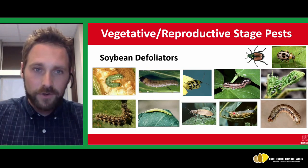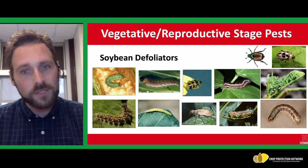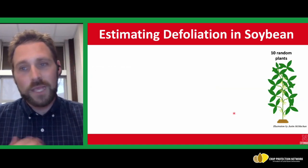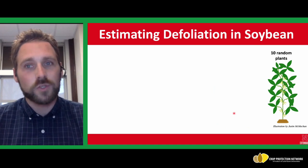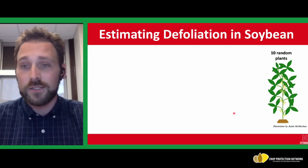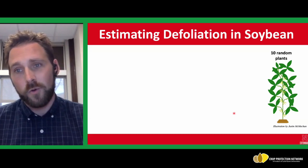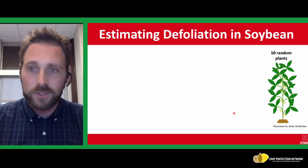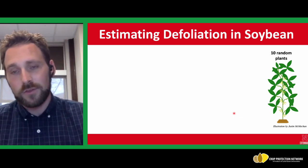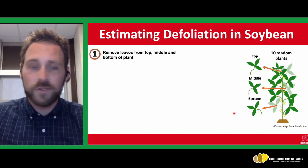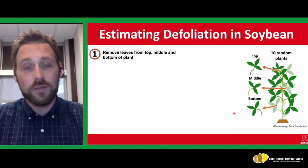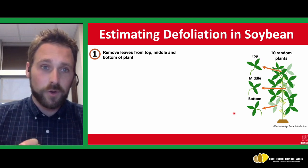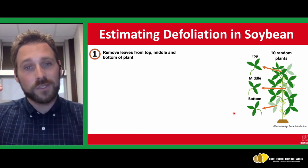With all of these defoliators, one would ask how would you ever possibly scout for so many different insects? We base this on the injury that occurs to a soybean plant rather than all the different species. We're going to walk through a graphic that breaks apart how to sample an individual soybean plant — and multiple plants within a field — to gain an understanding of the defoliation that's occurring. One of the first things to do is take trifoliates, individual leaves, from the top, middle, and bottom of the plant, because some insects are present at different points in the plant.